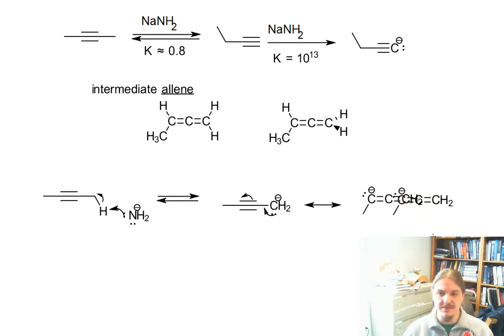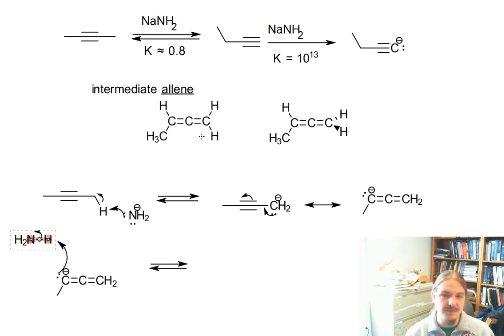And then this anion can pick up a proton. Our base source is ammonia, which was produced in the previous reaction. We can pick up a proton from ammonia and now we have our allene intermediate. Actually, take that back. We need to deprotonate one of these.